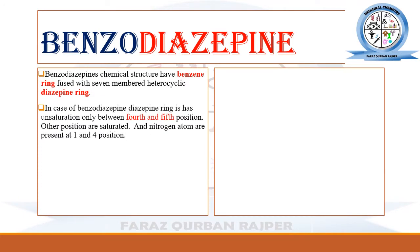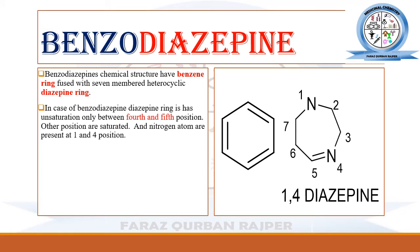Benzodiazepines are named so because their chemical structure contains two important rings. One is the aromatic benzene ring, which is fused with a seven-membered heterocyclic ring called the diazepine ring. That is why they are named as benzodiazepine. These two different rings — the benzene ring and the diazepine ring — are fused with one another.